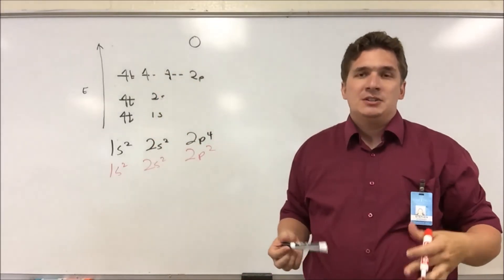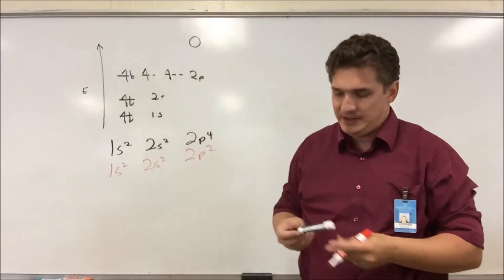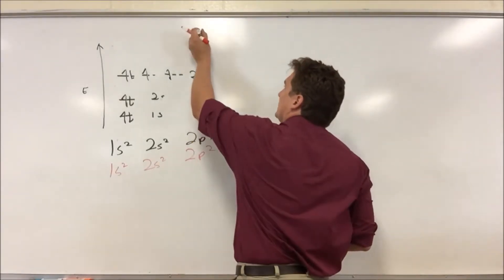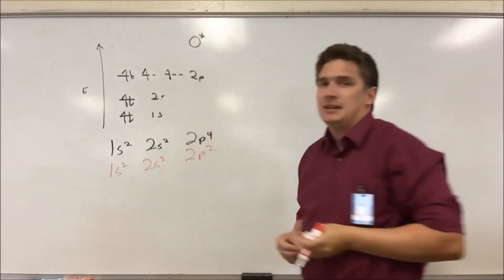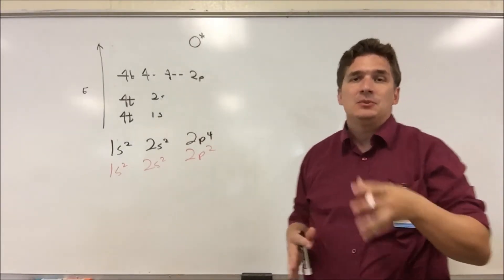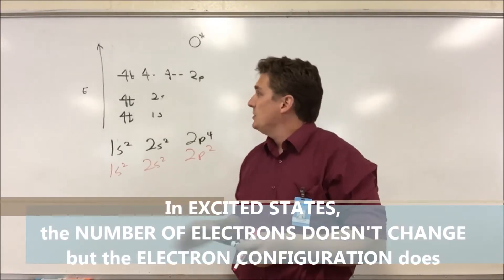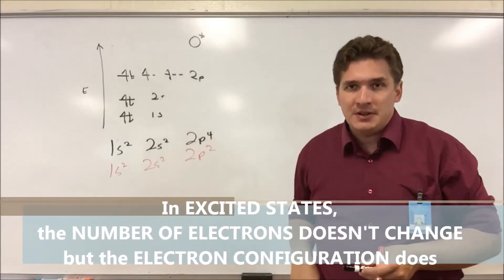So let's say we want to put oxygen into an excited state. There really isn't a good notation for that, so I'm just going to put a star up here to say that this is an excited state. When we're working with an excited state, the number of electrons in oxygen is going to be the same as it is particularly for our neutral atom. So we're still going to have our eight electrons.